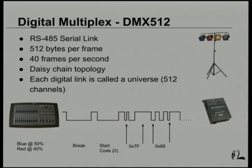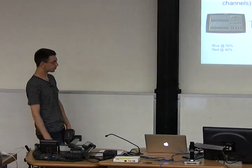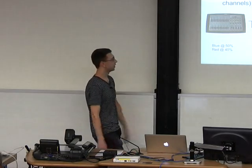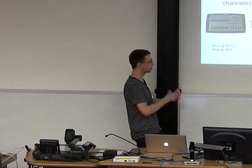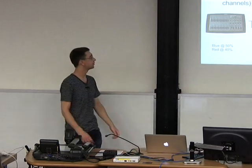In 1986, a bunch of electronic engineers got together, sat down in a pub, and created the DMX standard — Digital Multiplexing. It uses a serial RS-485 link and sends frames of data at various speeds, normally about 40 frames per second — enough to make the human eye perceive smooth motion. It sends frames of 512 bytes each, variable length but up to 512 bytes, and you chain your devices together.